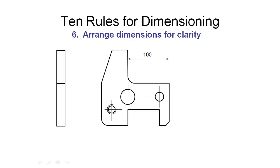So we're up to rule number 6, and rule number 6 is to arrange the dimensions for clarity. We've been through this example in a previous video, so I'm going to move through it quite quickly.